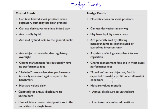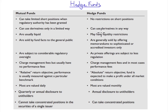Let's go down the column for hedge funds, contrasting them with mutual funds at each point. Hedge funds: no restrictions on short positions. Mutual funds really can't go short — there are huge restrictions on mutual funds using short selling. Hedge funds can also use derivatives in any way they want, while mutual funds have very limited use of derivatives.